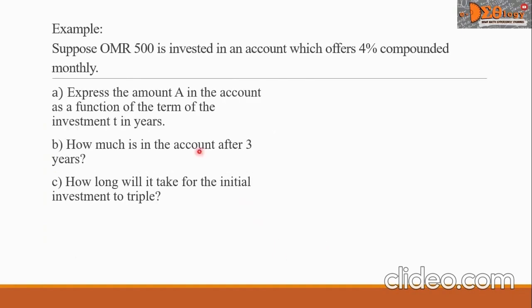Let us have an example. Suppose 500 Omani Rials are invested in an account which offers 4% compounded monthly. Letter A: express the amount A as a function of the term T in years. Letter B: how much is in the account after 3 years? Letter C: how long will it take for the initial investment to triple?